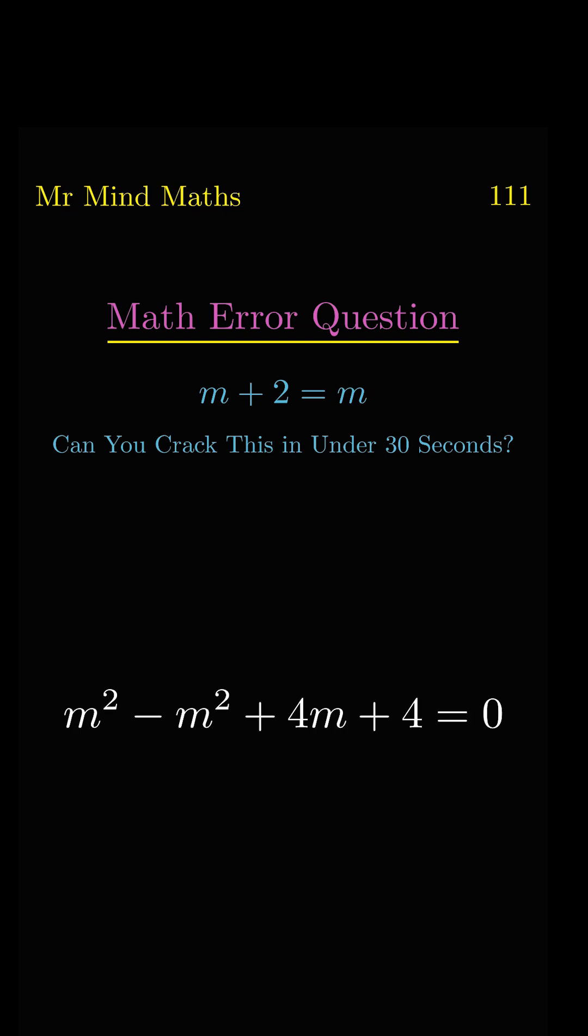Now we will shift 4 to the right side. If inside, 4 is multiplied with m, so it will divide to the right side. 4 and 4 will get cancelled, so it will become minus 1.